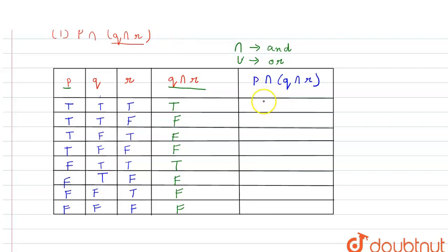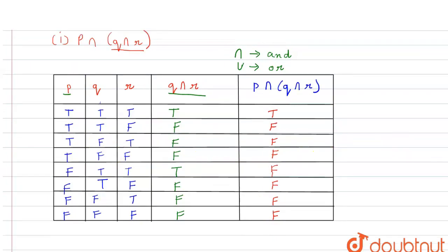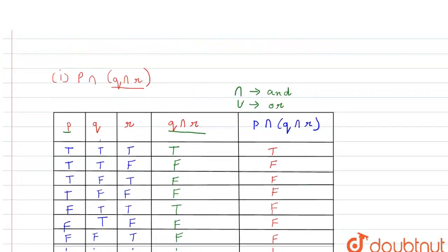We have to take the (q ∧ r) column and the p column and apply AND. True and true is true. True and false — one of them is false, so false. Then false, false, false, false, false, false. So this is our solution — the truth values of the first compound statement.